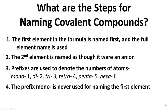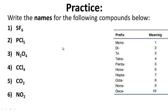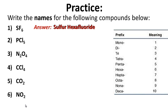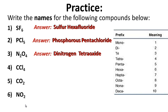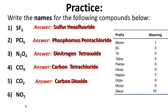For your notes: what are the steps for naming covalent compounds? Go ahead and pause this while you write. Practice: write the names for the following compounds. The answers are: number one, sulfur hexafluoride; number two, phosphorus pentachloride; number three, dinitrogen tetraoxide; number four, carbon tetrachloride; number five, carbon dioxide; and number six, nitrogen dioxide.